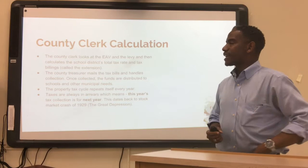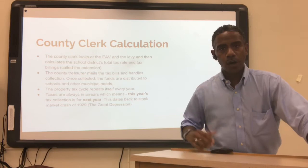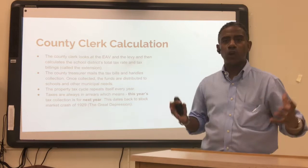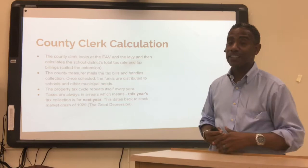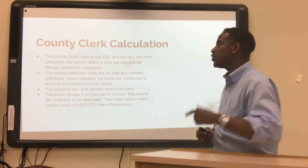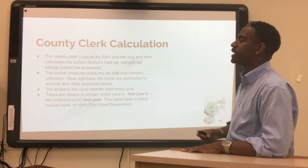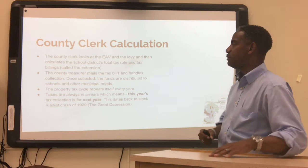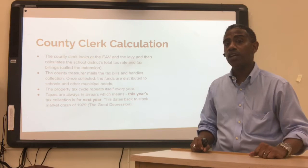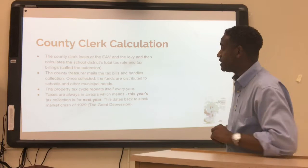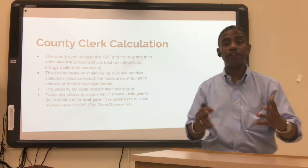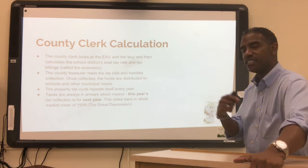The Cook County clerk — or county clerk — handles the calculation. People think the mayor or aldermen are important, but it's the county clerk who basically determines what happens financially in your city. The county clerk looks at the equalized assessed valuation and the levy, then calculates the school district's total tax rate and tax billings. This is called the extension. The county treasurer mails the tax bills and handles collection. Once the money is collected, funds are distributed to schools and other municipal needs — in a perfect world. The property tax cycle repeats year after year.